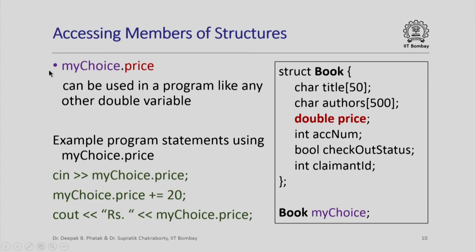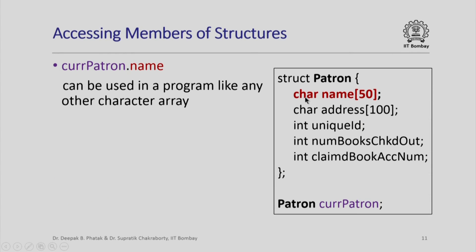So this is important: once you use the dot operator, what you get can be treated just like any other variable of the corresponding data type. Of course, we can access array members using the same dot operator. For example, if I have defined a variable 'current_patron' of structure type pattern, then 'current_patron.name' accesses the member named 'name' in that object. Since 'name' is actually a character array, 'current_patron.name' can be used in a C++ program just like any other character array.